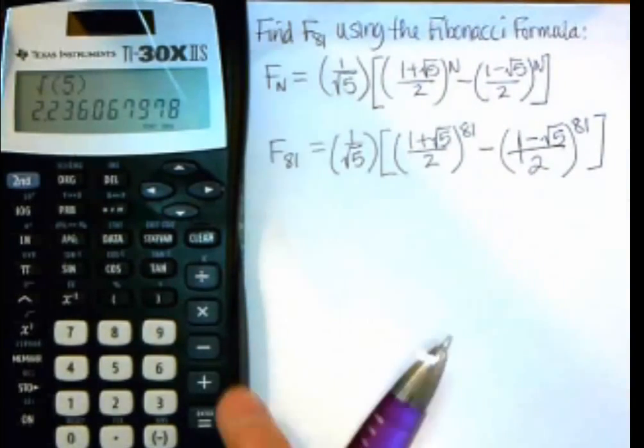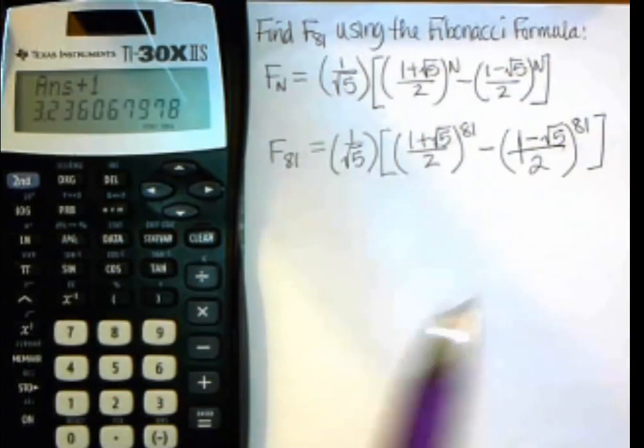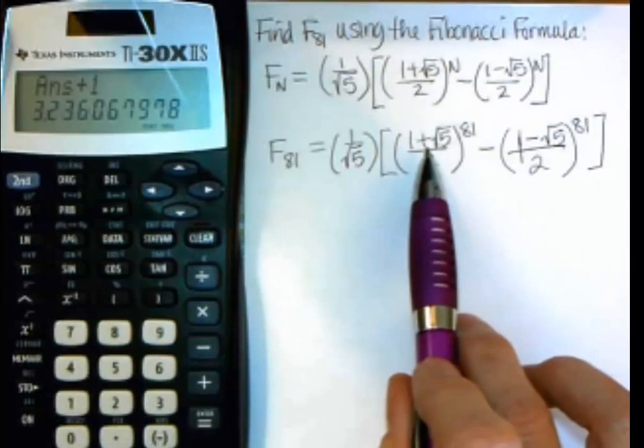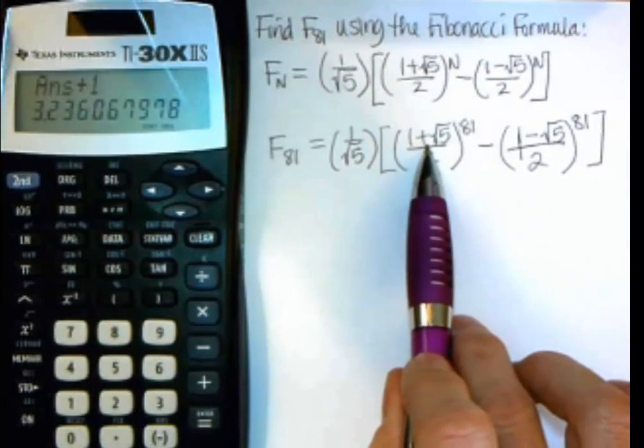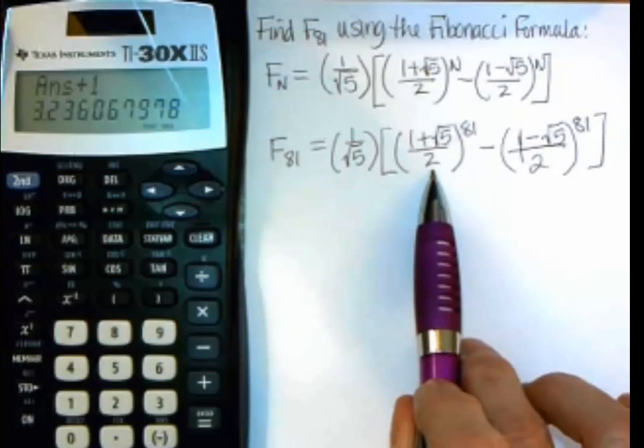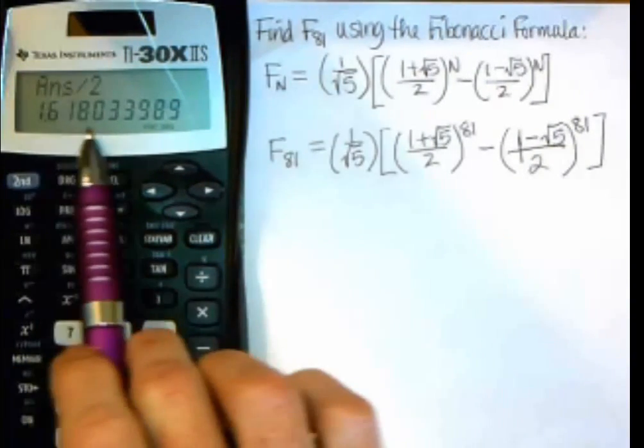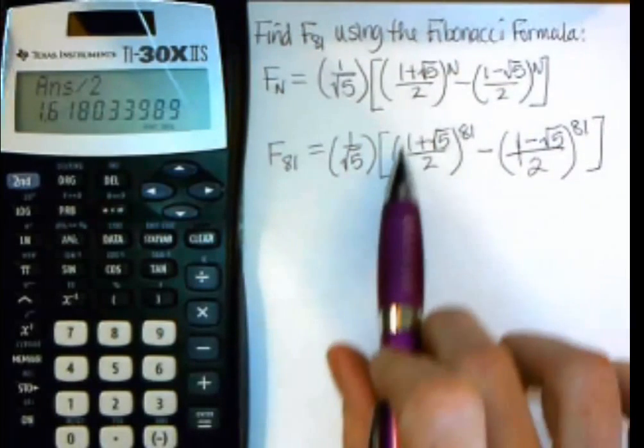Then I want to add 1. So I'll just do plus 1 and push enter again. Now I have 3.23606 for my numerator. And the next thing I want to do is divide by 2. So then I'll just do divide by 2. And now I have 1.618 for this whole part here in parentheses.